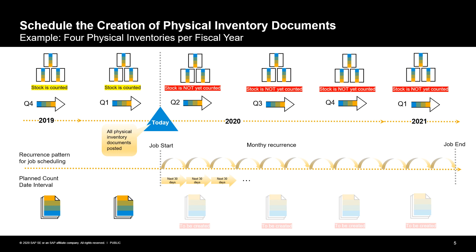This allows you to count fast-moving materials in your warehouse more often than slow-moving materials. The physical inventory of the materials shown in the figure is managed by cycle counting, meaning the materials are classified with the appropriate cycle counting indicator value for quarterly physical inventory. The time series in the middle of the figure shows two important parameters defining the scheduling function of the batch job. First, a recurrence pattern for scheduling, which offers options like single run or a recurrence pattern on a minute, hourly, daily, weekly, or monthly basis. Second, a planned count date interval, which defines a relative time interval for which you want to determine the creation of the necessary physical inventory documents. The figure shows the batch job started monthly from the second quarter of 2020 until the first quarter of 2021.